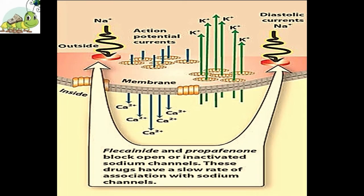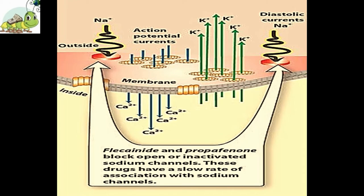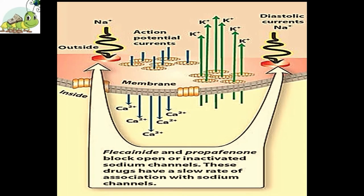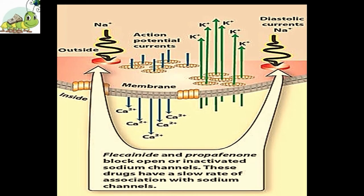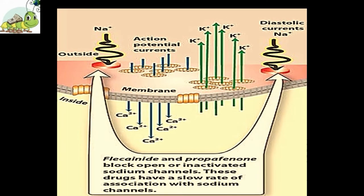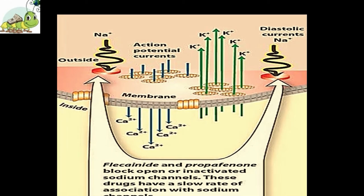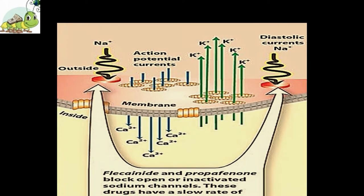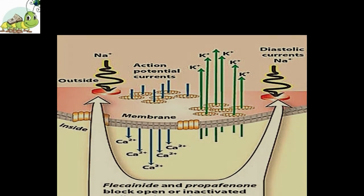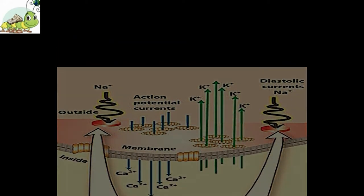Electrocardiographic changes: Flecainide increases the PR and QRS intervals and, to a lesser extent, the QTc interval. The rate of ventricular repolarization is not affected, and the QT interval prolongation is caused by the increase in QRS duration. Hemodynamic effects: Flecainide produces modest negative inotropic effects that may become significant in the subset of patients with compromised left ventricular function.